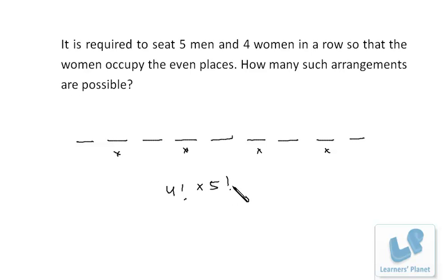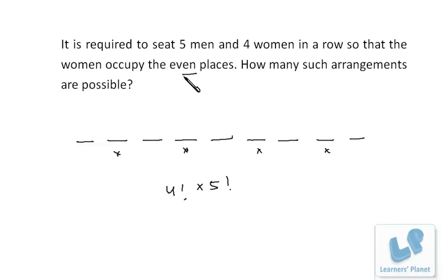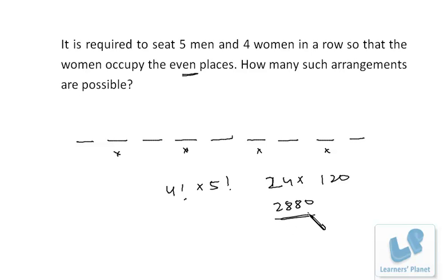Now we have five men and five remaining positions, so five men can be arranged in 5 factorial ways. Do not take 9 factorial, because that would include all cases where women can take any position — but in this case women sit only on even positions. 4 factorial is 24 and 5 factorial is 120, so 24 into 120 equals 2880. So there are 2880 ways. We didn't use any combination formula here — just common mathematical sense.